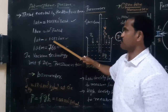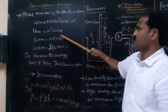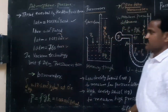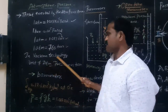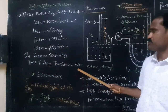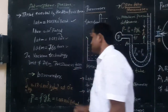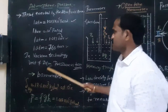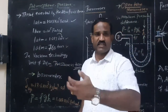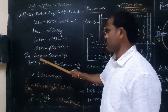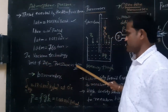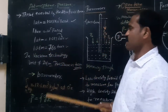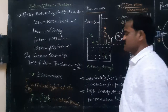One atmospheric pressure equals 1.013 × 10⁵ Pascal, which is 1.013 bar since 1 bar equals 10⁵ Pascal. In vacuum technology, the unit of atmospheric pressure is torr. One atmospheric pressure is equal to 760 torr.